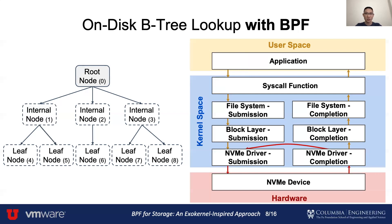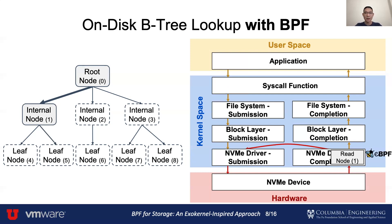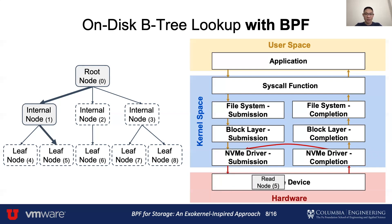Instead, if we can download the application logic into the kernel as a BPF function, we can reduce the software overhead significantly. First, we start at the root node and do the binary search to find the offset of the next node. Then the application submits a special IO request. The request will first go through the entire submission path and reach the NVMe device. After the request is completed, an interrupt will be generated and the interrupt handler of the NVMe driver will be invoked. At this point, we already have the data of the node we need, so instead of doing the binary search in user space, we can invoke the BPF function here to run the binary search and get the offset of the next node. After retrieving the offset, we can immediately resubmit the request to the device, instead of letting the application submit another request from user space. After the new request is completed, we run the BPF function again and find that we have already reached the leaf node. Therefore, we can complete this request and return the data back to user space.